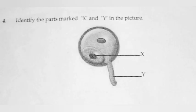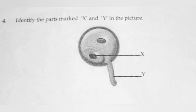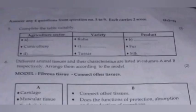Identify the parts marked X and Y in the picture. Answer: X is the Generative nucleus. Y is the Pollen tube.